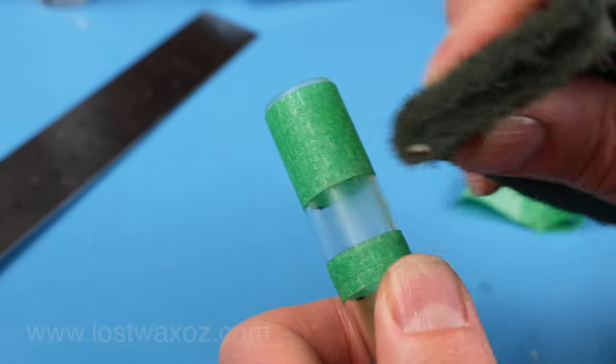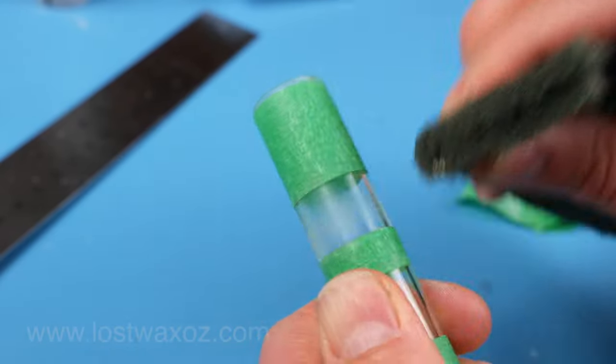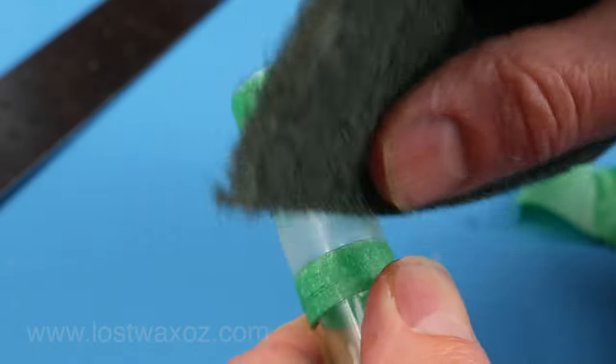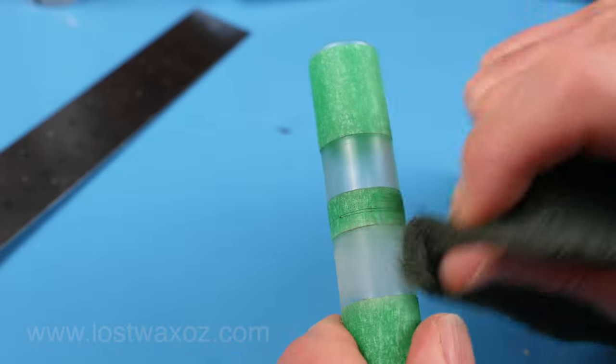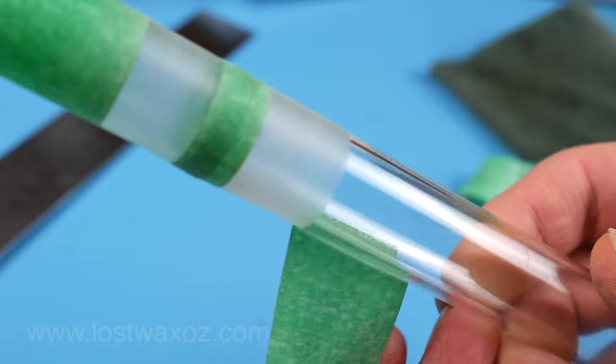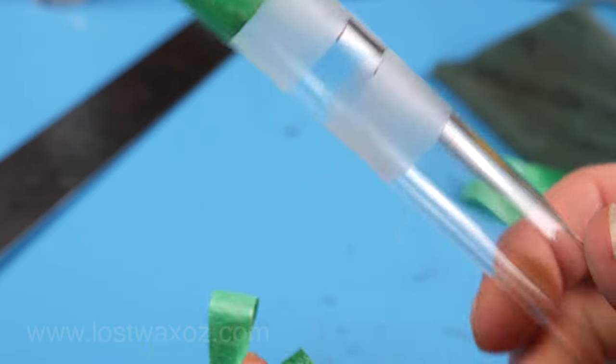Now you can grab your favorite green scrubby and create some nicely frosted rings around the acrylic. Just watch that you don't scrub too hard and rub away the tape that's protecting the edges. Now for the fun part taking the tape off to reveal your masterpiece.